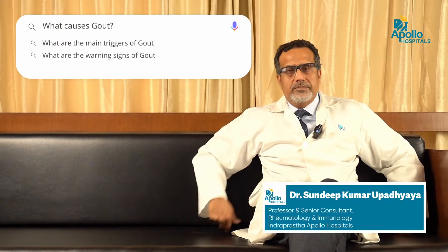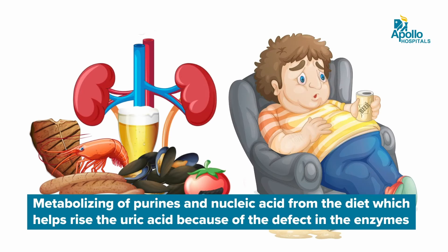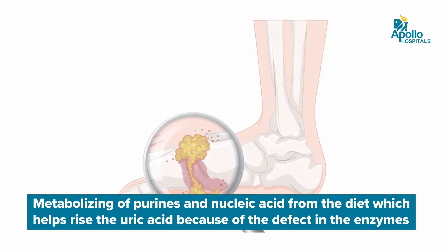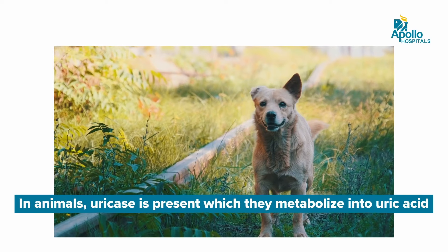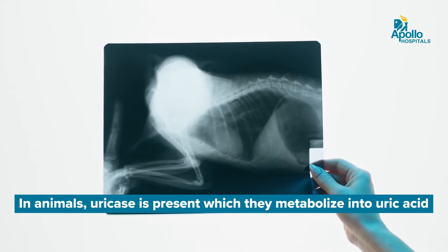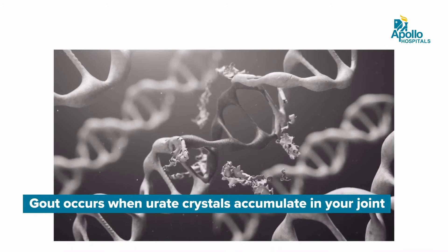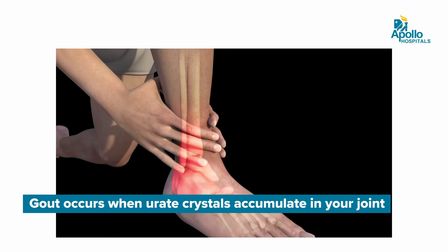What causes gout? Gout is a metabolic disorder and therefore there is a defect in the enzyme that metabolizes the purines from our diet and nucleic acids. Subsequently, it allows uric acid to build up, and the absence of uricase in humans allows the uric acid levels to go very high. Uricase is present in animals; they are able to metabolize uric acid to other metabolites that are soluble in water and can be excreted. But humans lacking this particular enzyme, and with some genetic problem, make more and more uric acid which deposits in the joints. This is what causes gout.